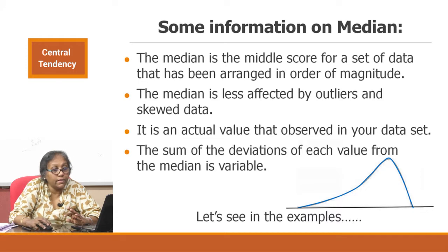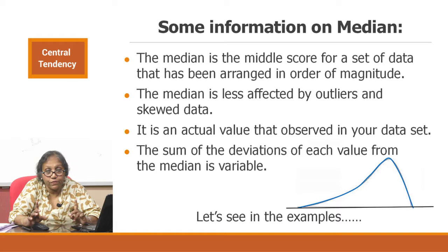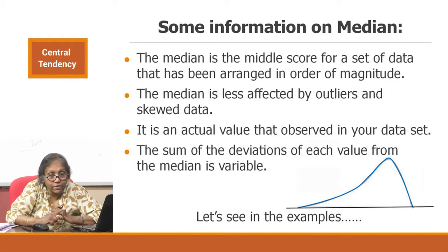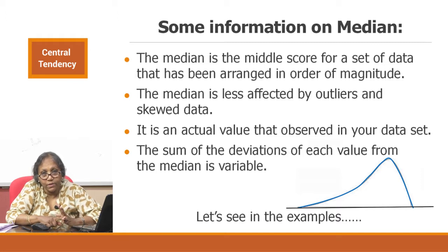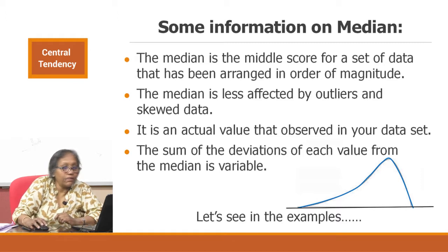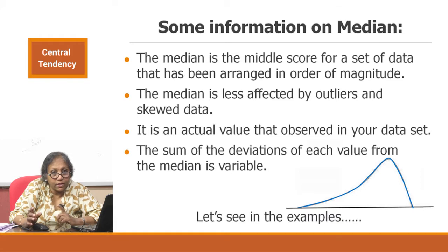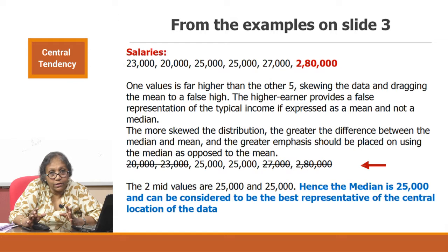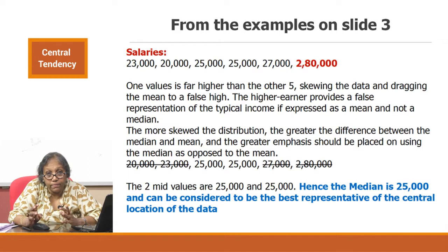If you graph the salary data, you get a distribution very different from the graph we saw for the mean. In the fridge temperature and hemoglobin examples, values cluster around the mean. But in the salary example, values cluster around a different point — the median. Removing two values from the lower side and two from the upper, we are left with two identical numbers, giving a median salary of 25,000, which is the point around which the salaries in that office are clustering.